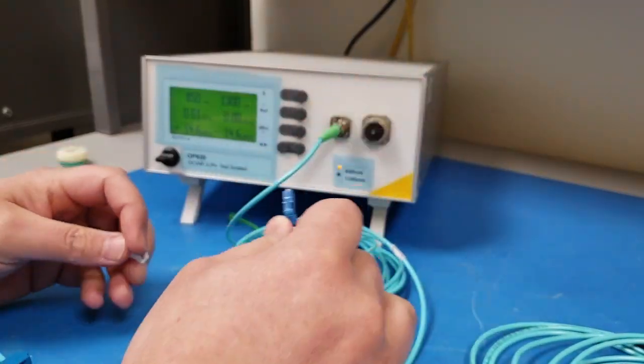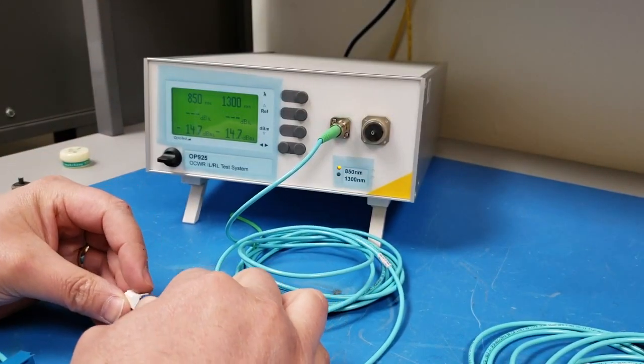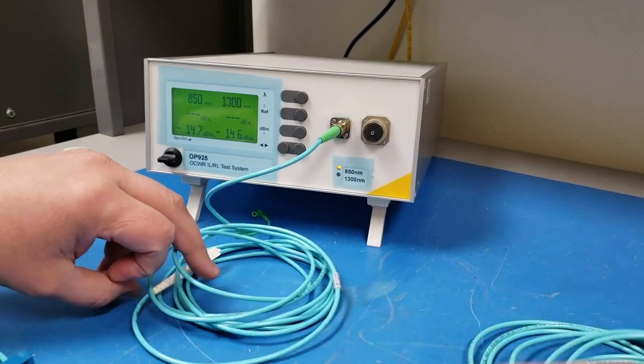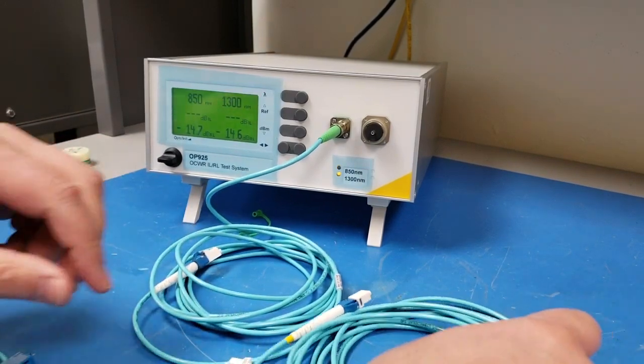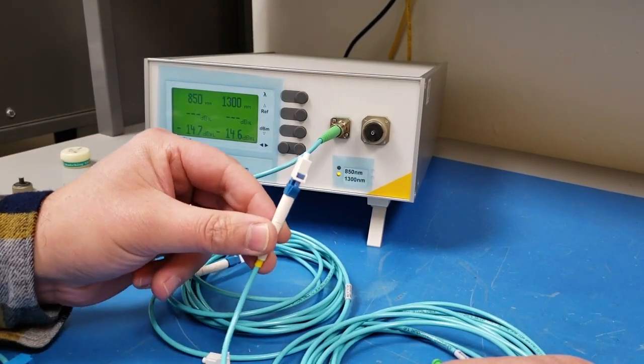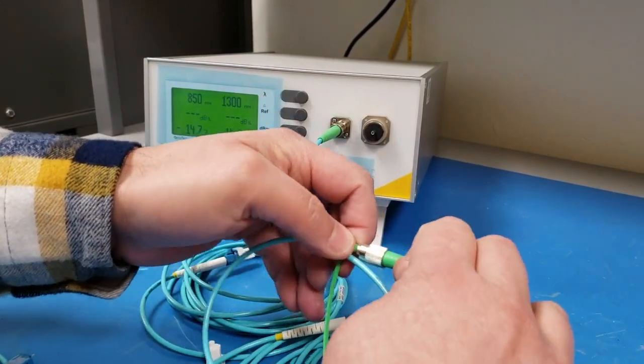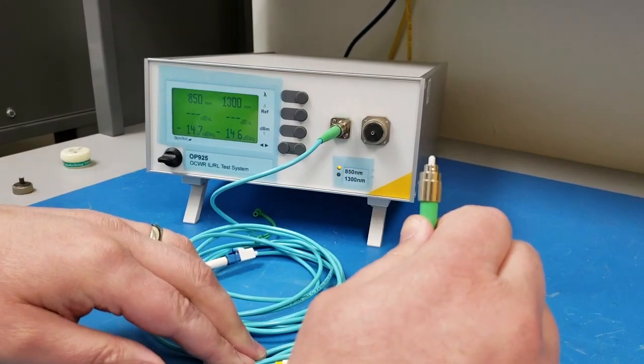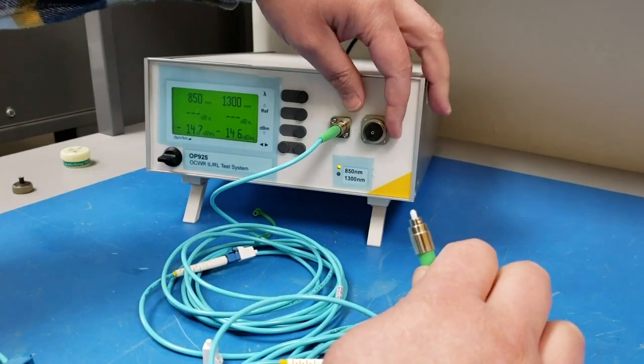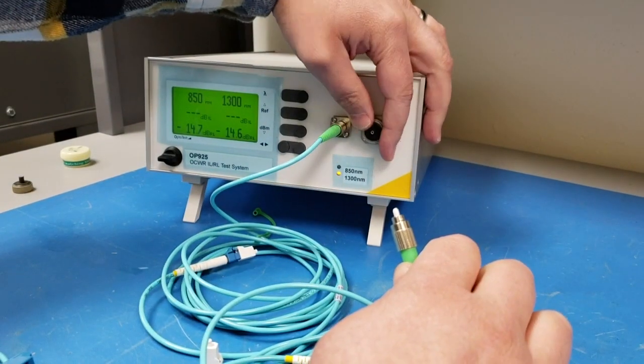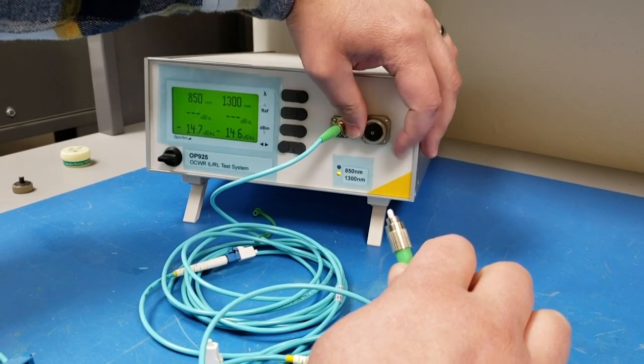For this measurement, we also are going to need a receive cable which will connect up to the back end of the DUT. This receive cable needs to have a connector that's similar to the DUT's connector and also a connector on the back end that is angled, and what this is going to do is eliminate some of the back reflection from the back end of the cable.